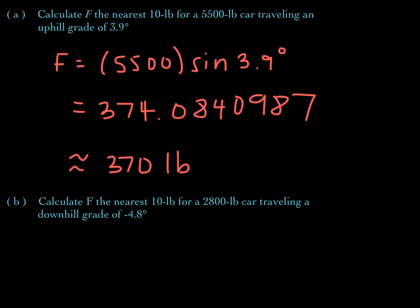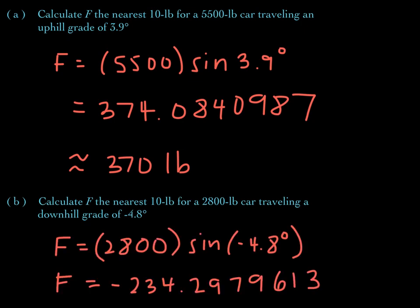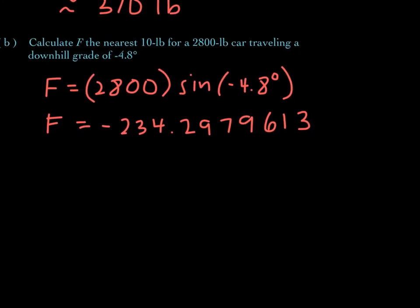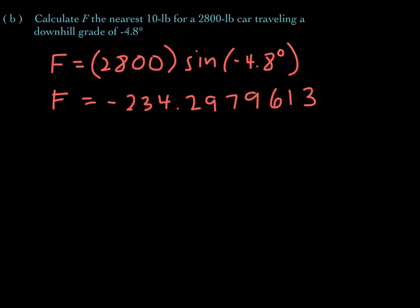Let's try another one: calculate F to the nearest 10 pounds for a 2,800-pound car traveling downhill on a grade of negative 4.8 degrees. This is a perfect spot to pause the video and try to figure out the grade resistance for this scenario. Go ahead and pause. The answer is negative 230 pounds — don't forget units. The grade resistance is negative, and that makes sense because you're going downhill in this scenario.